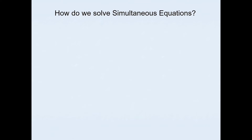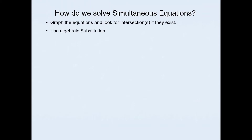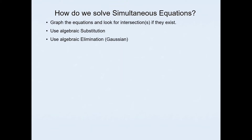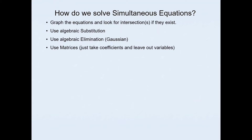There are several ways in which we can solve simultaneous equations. We can graph the equations and look for the intersections if they exist. We can use algebraic substitution or algebraic elimination to solve for the intersections. We can also use matrices or a graphics calculator.